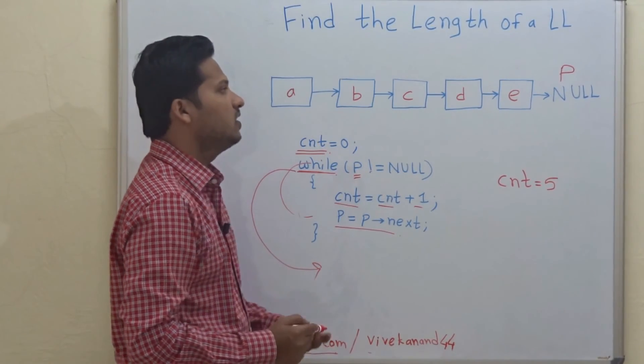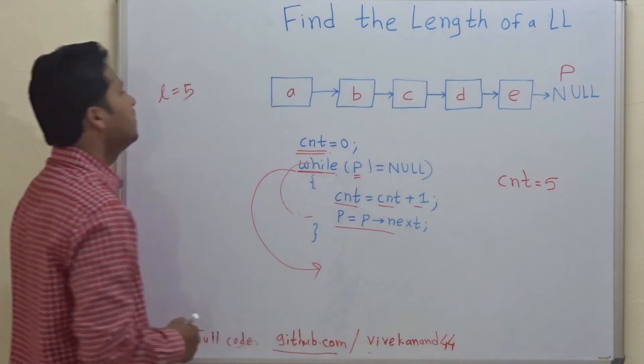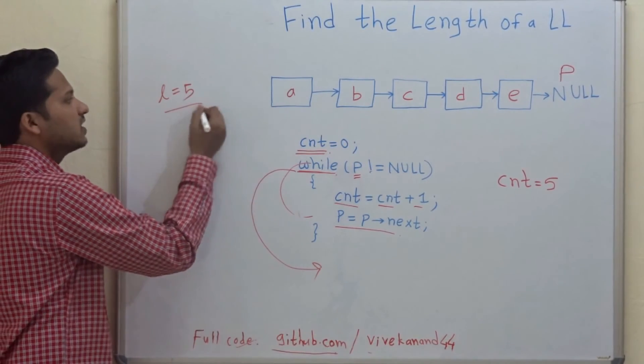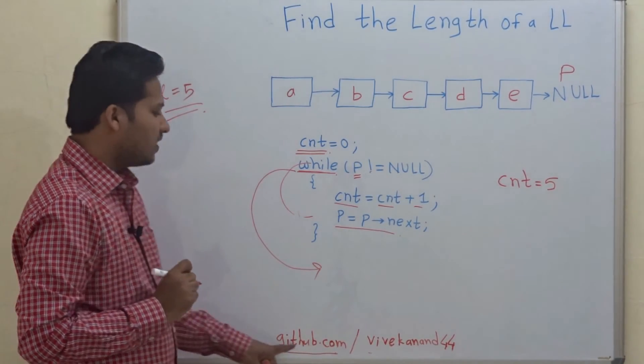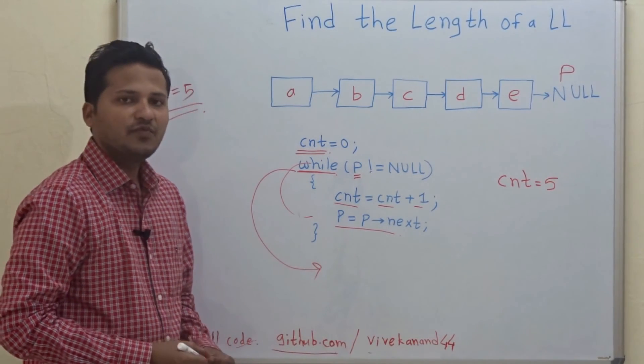This is how we calculate the length of the linked list. The length of this linked list is equal to five. You can find out the whole code at github.com/vivekanal44.